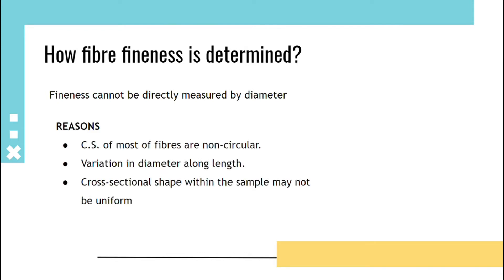variation in diameter along length, cross-sectional shape within the sample may not be uniform. For example, cotton has convolutions, wool has serrated structure.